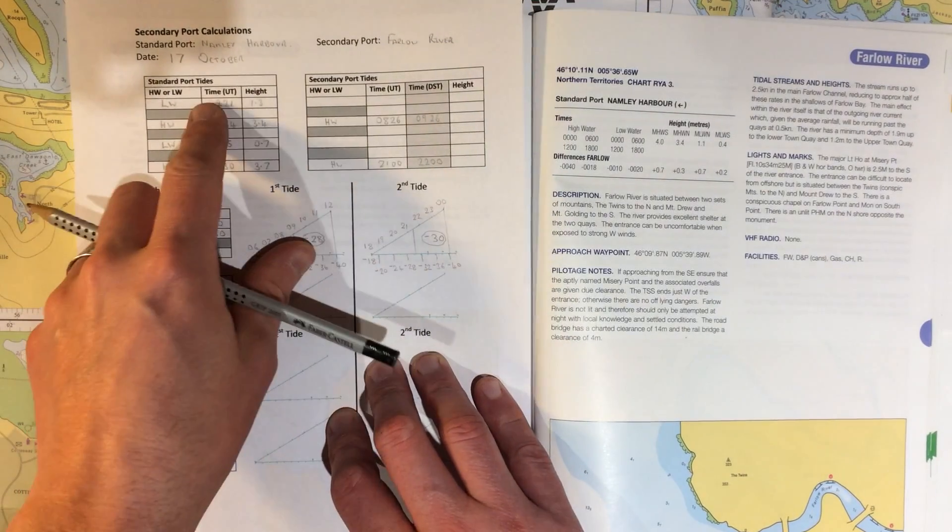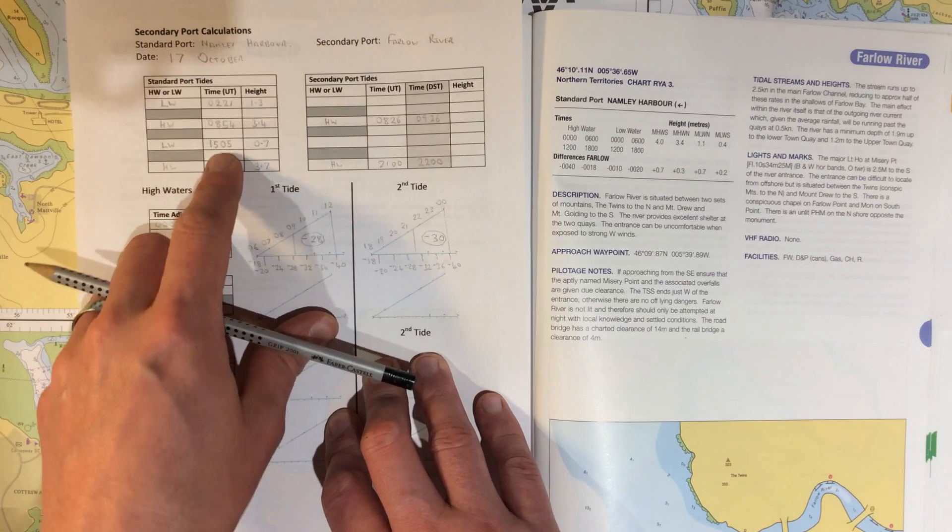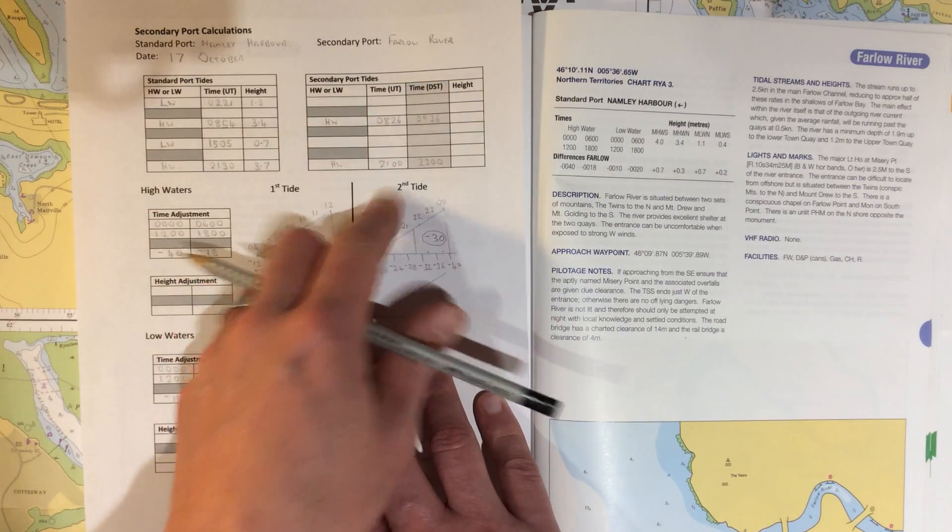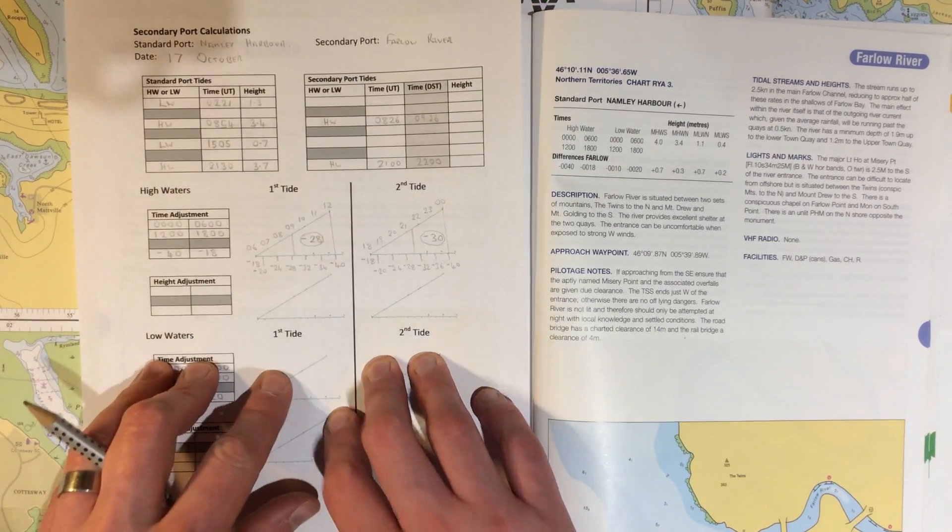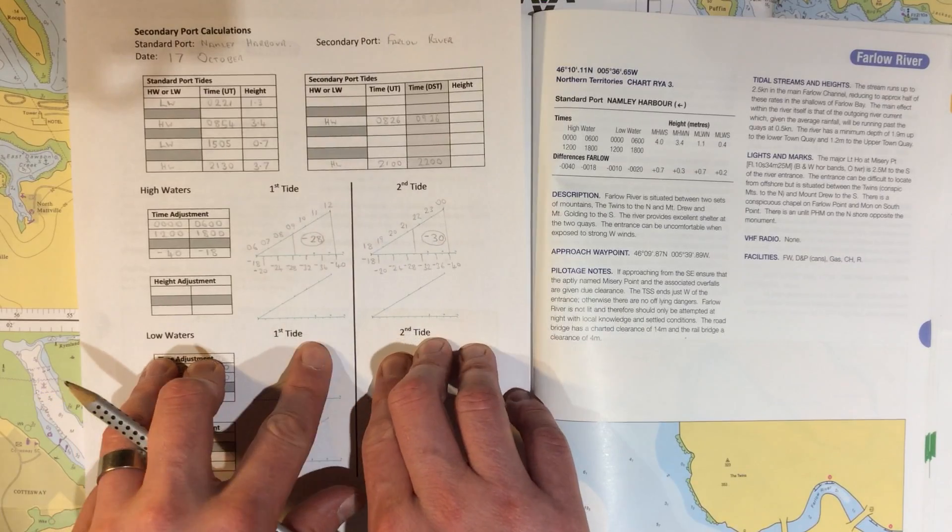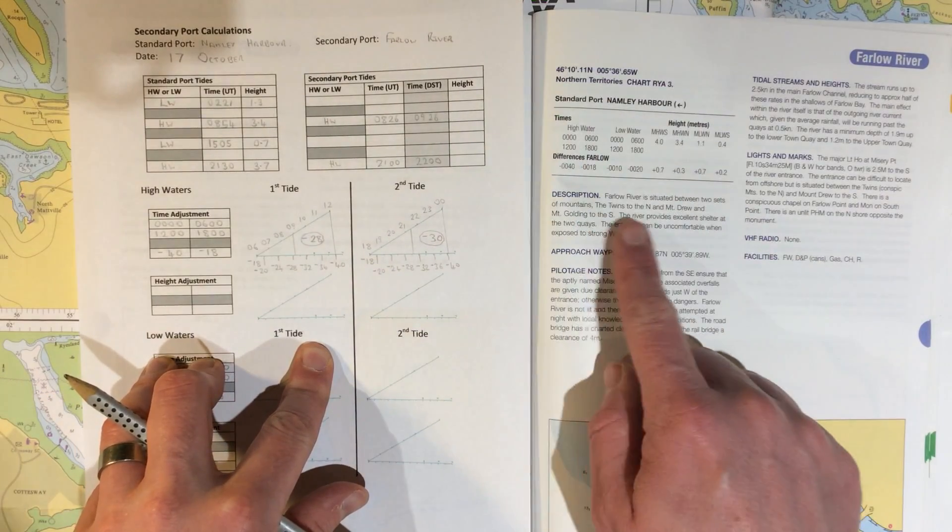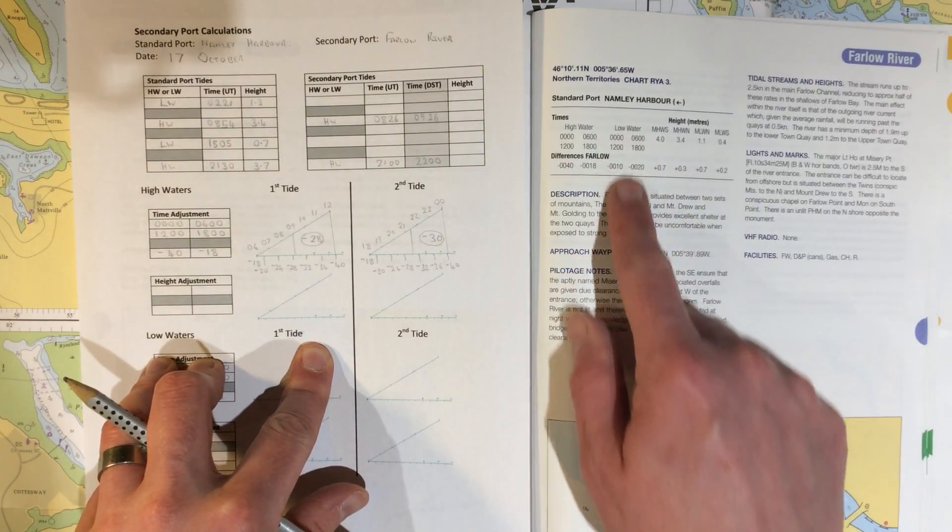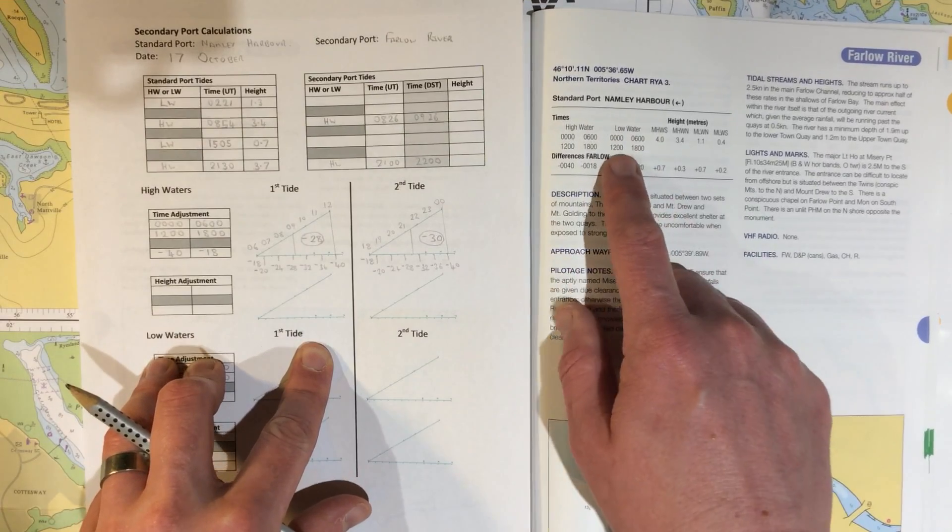We're now going to look at converting the standard port low water times to our secondary port. The process is very similar to that which we used for high water. We need to refer to this table over here, in particular these two columns here under low water.